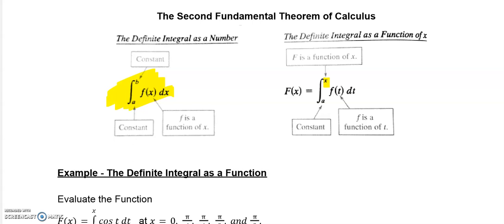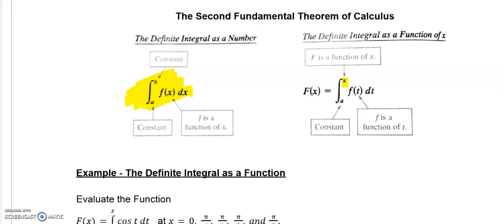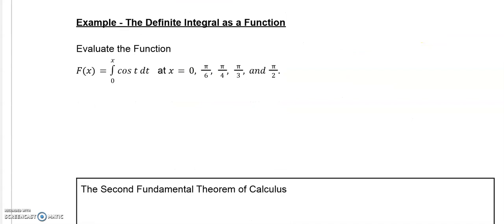Well, now we can set it up to figure out what that upper limit has to be for it to be equal to a specific area. So we're setting it up as, like this says, an integral as a function of X. So let's take a look at an example. What does this mean?